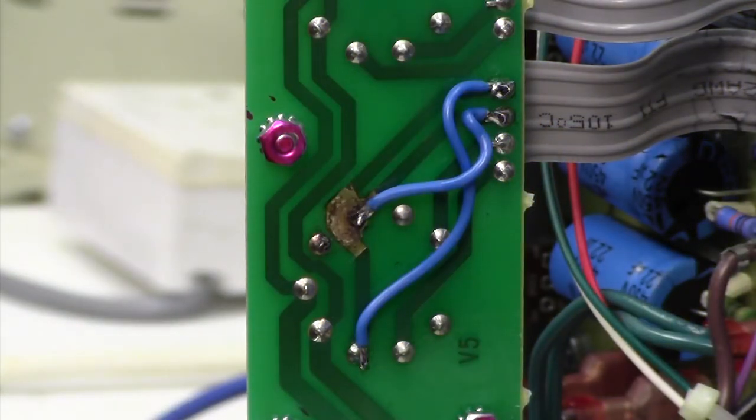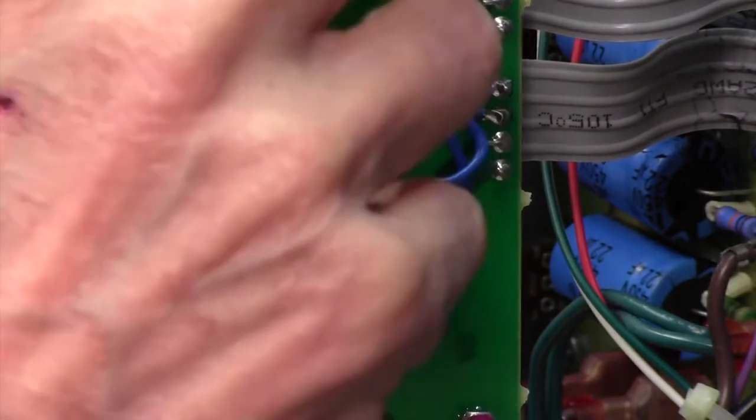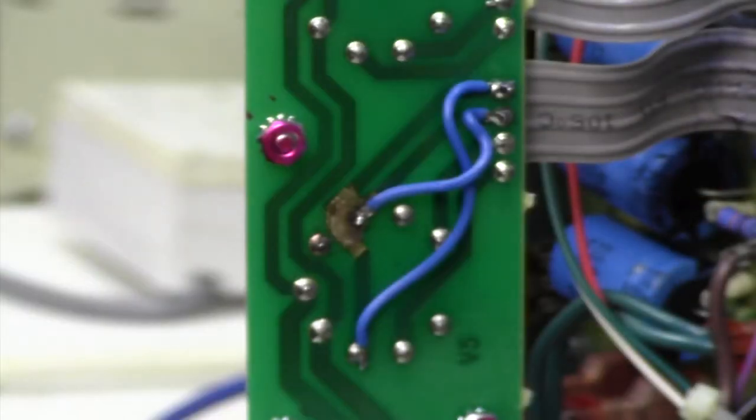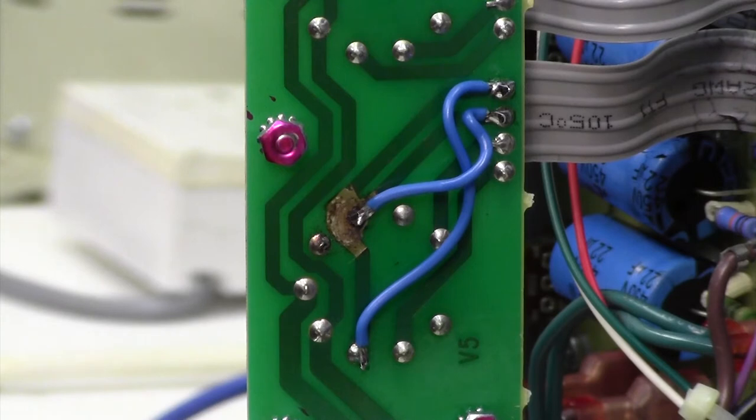So what we now need to do is to get this board juggled back into there, carefully avoiding any strain on these ribbon cables. And then what I think I'll do is I think I'll put a couple of screws in and pop some valves in and see what happens. See you in a bit.